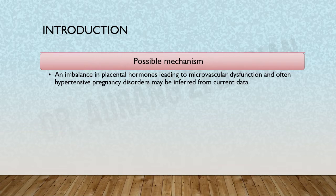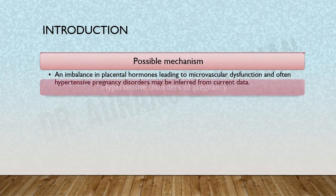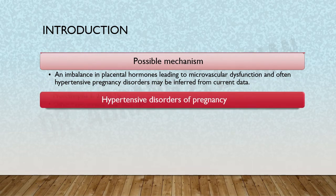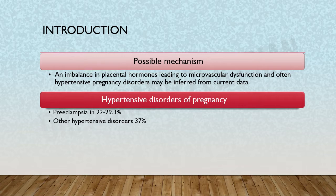We do not exactly know the mechanism of peripartum cardiomyopathy, but an imbalance in placental hormones leading to microvascular dysfunction may be inferred from current data. Hypertensive disorders of pregnancy, including preeclampsia, are present in 22 to 29.3 percent of patients with peripartum cardiomyopathy, and other hypertensive disorders may be present in up to 37 percent.